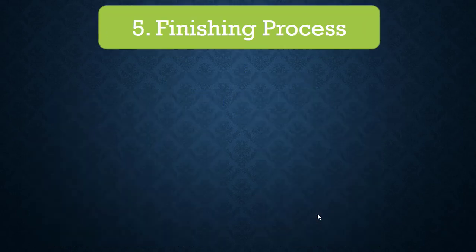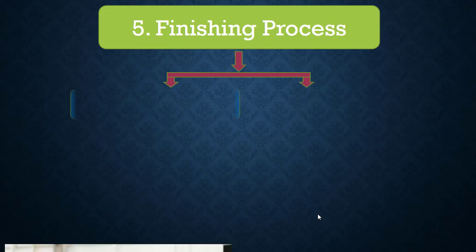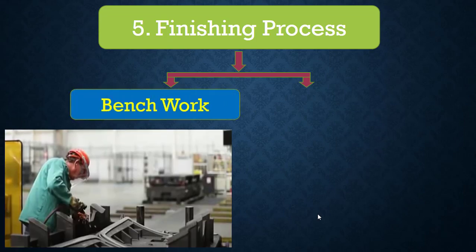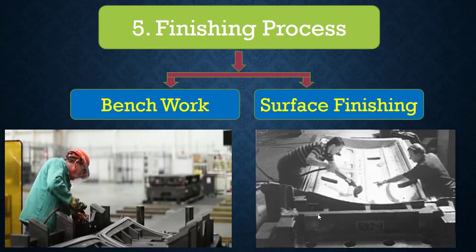Number 5: Finishing process. The finishing process is divided into two. Number 1: Bench work. Number 2: Surface finishing. Bench work activities include tapping, mating part preparation, stoning, removing milling marks, steel deburring, polishing the die, and keeping the die ready for the next stage.